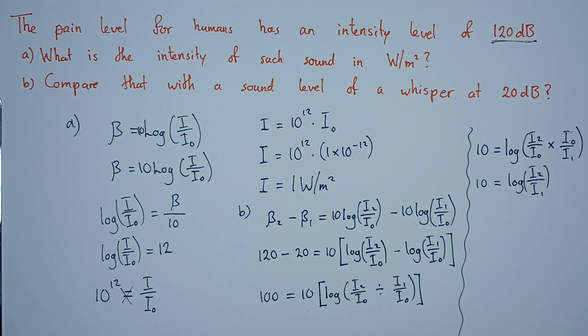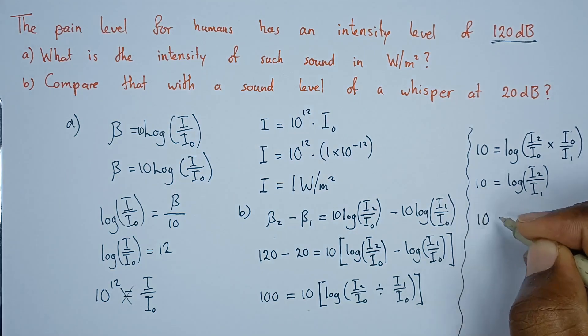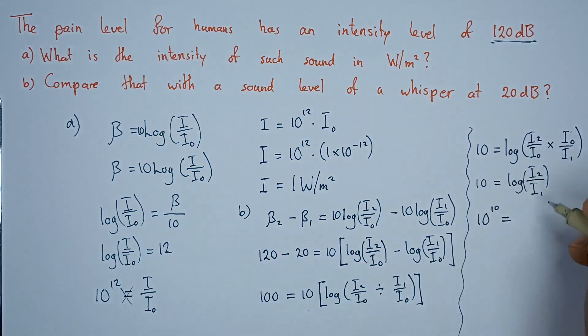From here now, we can just change it from logarithmic form to exponential form, where we say the base is 10, so 10 to the power 10. Base to the power exponent equals the argument. Argument is I2 over I1.